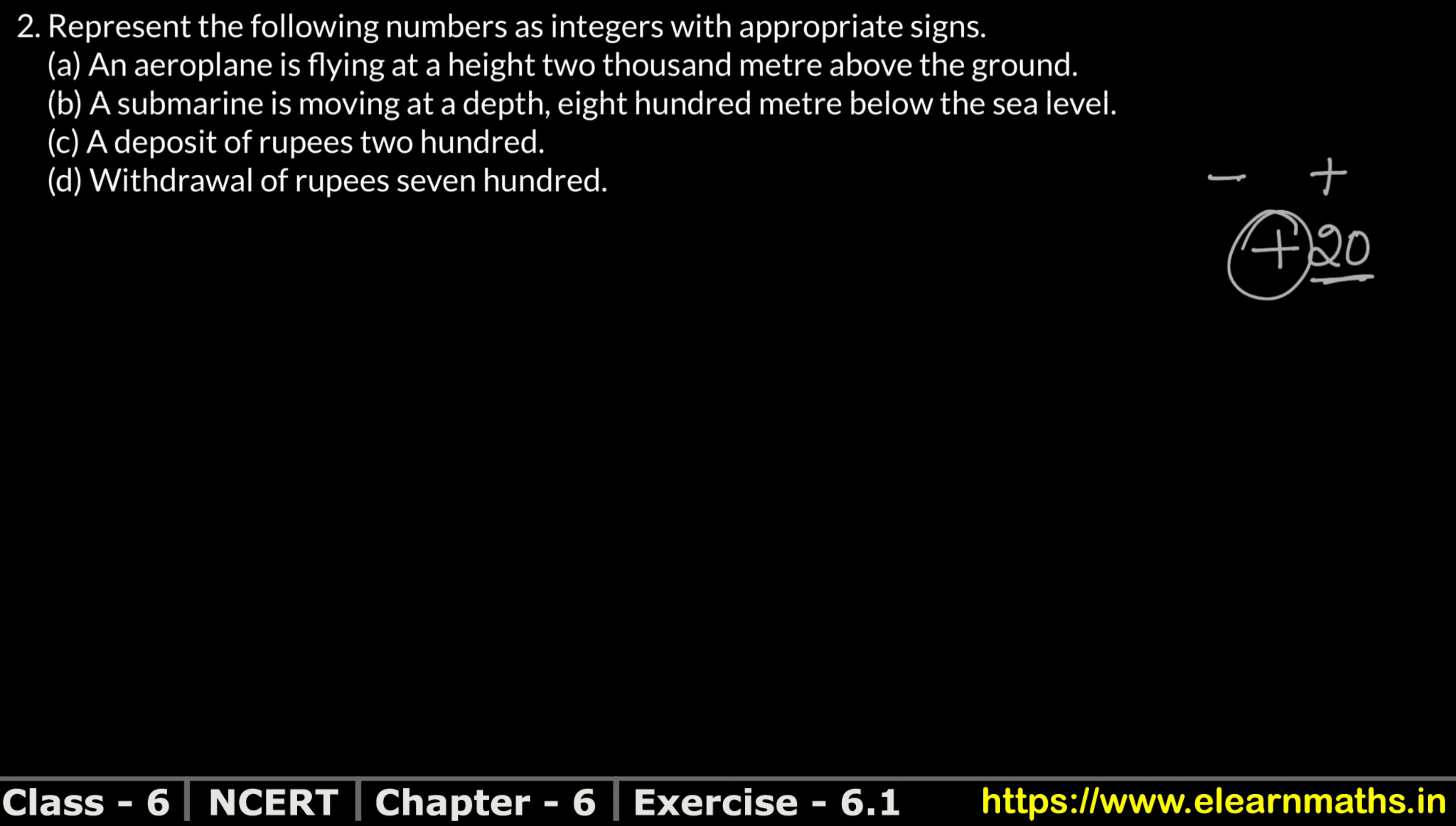Let's see what part A is saying. An aeroplane is flying at a height 2000 meter above the ground. Above the ground. The aeroplane is flying at a height of 2000 meters above the ground.